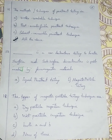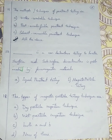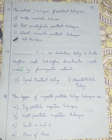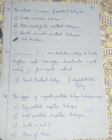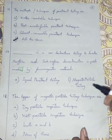Question number 17: Which is a non-destructive testing method used to locate surface and subsurface discontinuities in parts made by ferromagnetic materials? Option A is liquid penetrant testing, Option B is magnetic particle testing. Since ferromagnetic materials are given, you should choose none other than magnetic particle testing.